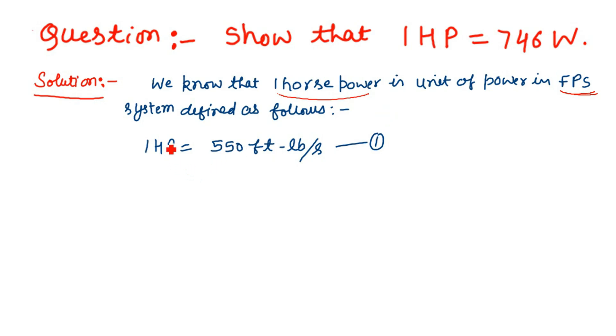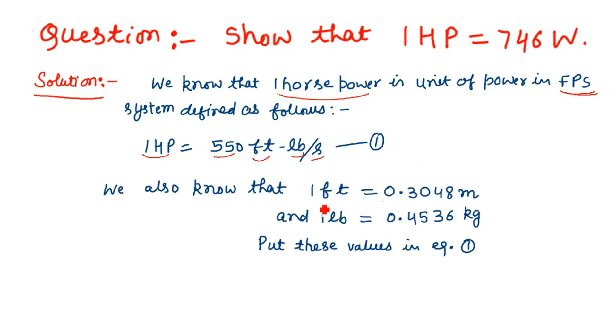In the FPS system, 1 horsepower is defined as 550 foot-pounds per second. We also know that 1 foot equals 0.3048 meters and 1 pound equals 0.4536 kilograms. Let us put these values in equation 1.